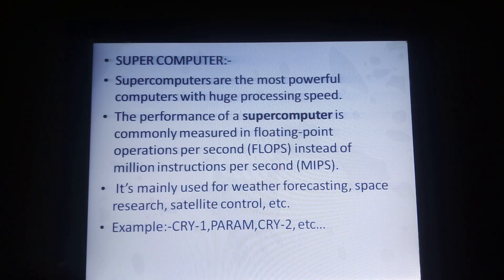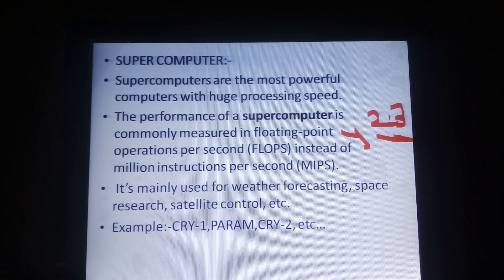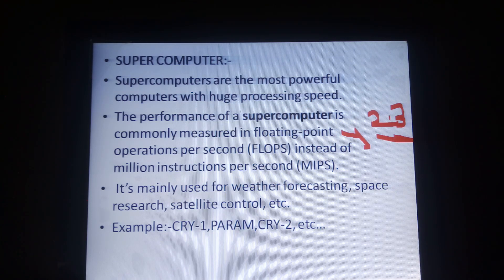Now, super computers are the most powerful computers with huge processing speed. The performance of a supercomputer is commonly measured in floating point operations per second — that is FLOPS — instead of millions of instructions per second, which is MIPS. Floating point means numbers in decimal form. Supercomputers are mainly used for weather forecasting, space research, satellite control, etc. Examples of supercomputers include CRAY-1, PARAM, and CRAY-2.